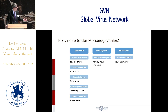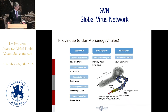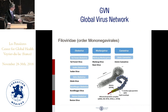Most of the filoviruses are highly pathogenic for humans, with the exception of Reston virus, which is pathogenic for non-human primates but not for humans, as far as we know. This is the morphology of the filoviruses — a very characteristic morphology, as you can see here with the electron micrograph. Filoviruses are composed of seven structural proteins, and what you have to keep in mind is that there is only one surface glycoprotein, the GP, which is inserted into the lipid membrane of the particles.